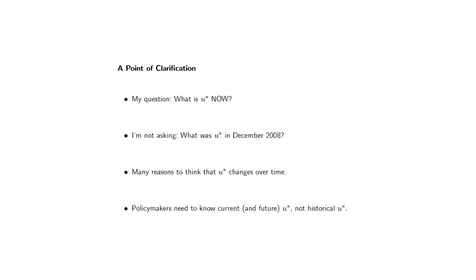I want to clarify one thing before I get into the meat of the talk: my question is that of a policymaker. My question is what is the natural rate of unemployment now? I'm not asking what was the natural rate in December 2008 or trying to evaluate past monetary policy decisions. The natural rate of unemployment changes over time, and what policymakers need to know is the current level of the natural rate, and also be able to formulate forecasts of how it is likely to evolve over time.